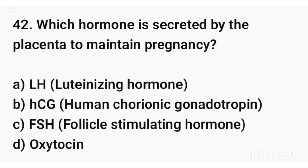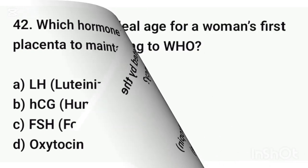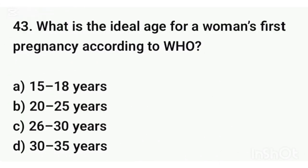Question number forty-two. Which hormone is secreted by the placenta to maintain pregnancy? The correct answer is option B: HCG — Human Chorionic Gonadotropin.